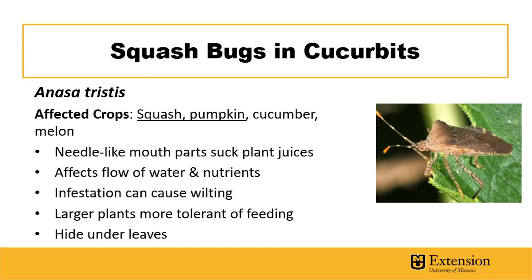They insert those needle-like mouthparts into the leaves and suck the juices and sap out. This impacts plants because it affects the flow of sugars back down to the root system, as well as water and nutrient movement. The plant can become arrested, and with serious infestations you can see plants wilting because of this.